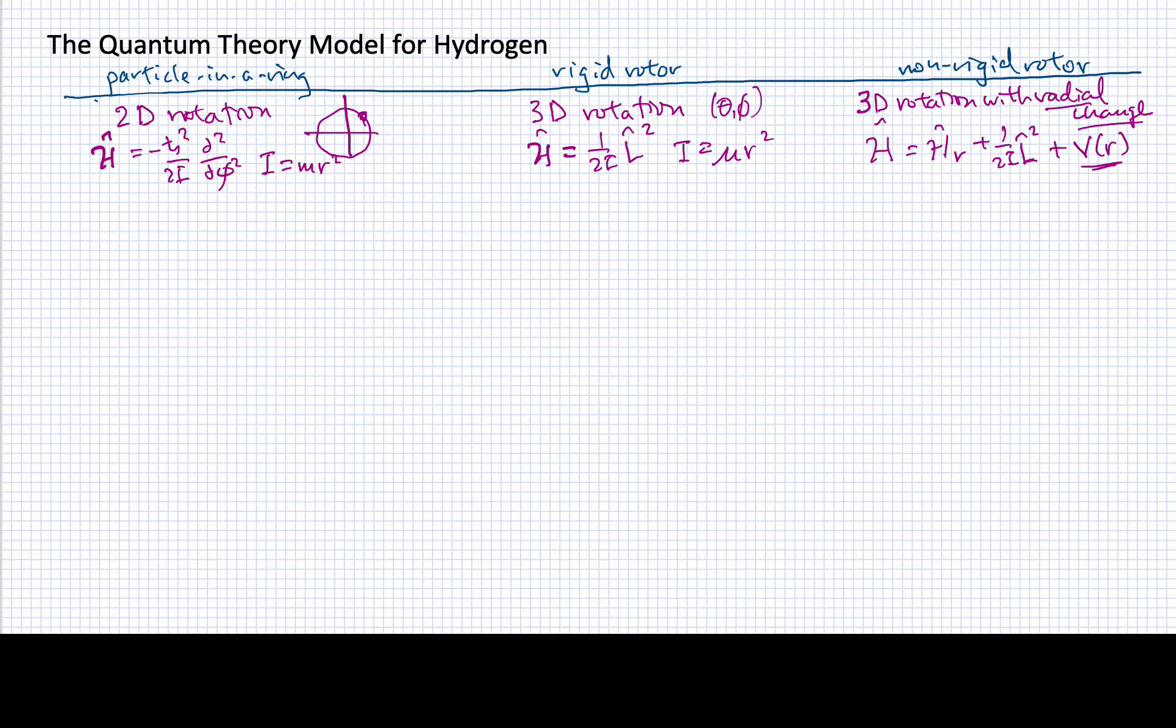We'll have a part that involves the potential interaction between two particles that governs that radial change. All of these are elements we'll now see in the hydrogen atom when we begin to look at its quantum mechanical development.